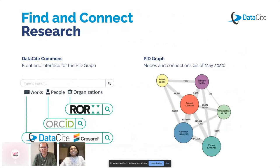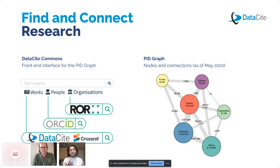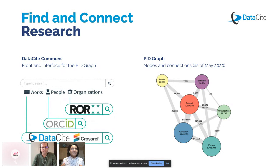Thanks Matt. At the moment, the PID graph connects three types of identifiers: DOIs, ORCIDs, and ROR identifiers. DOIs identify datasets, publications, software, funders, etc. in the PID graph. ORCIDs identify people, and ROR identifiers identify organizations. DataCite Commons is really the front-end interface to explore the PID graph — you can use it to find PIDs and their connected information.